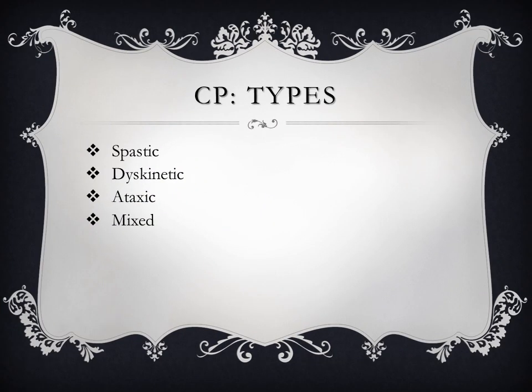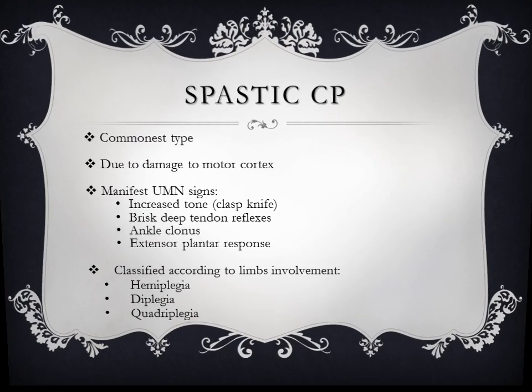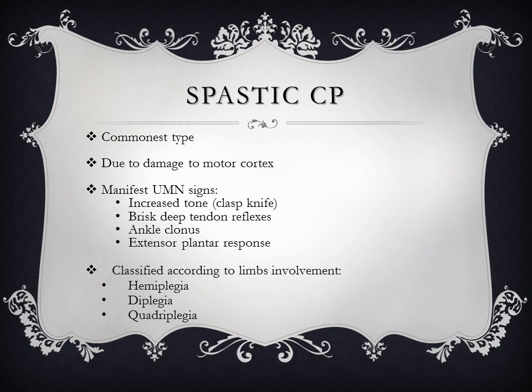There are four main types of cerebral palsy: spastic, dyskinetic, ataxic, and mixed types. Spastic is the most common type, occurring as a result of damage to the motor cortex. Patients typically manifest signs of upper motor neuron lesion including increased tone, brisk deep tendon reflexes, ankle clonus, and extensor plantar response.